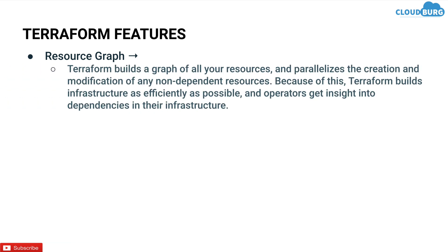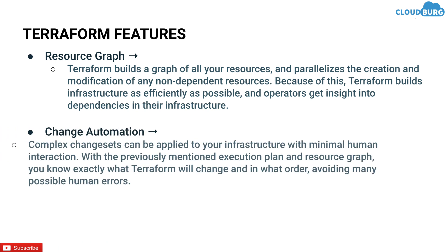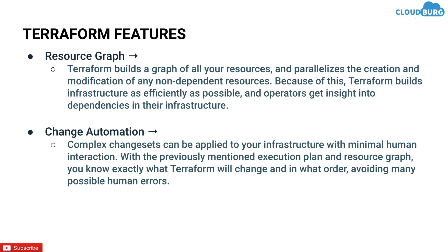Next is resource graph. Terraform builds a graph of all your resources and parallelizes the creation and modification of any non-dependent resources. Because of this, Terraform builds infrastructure as efficiently as possible and operators get insight into dependencies in their infrastructure. Next is change automation — complex change sets can be applied to your infrastructure with minimum human interaction. With the execution plan and resource graph, you can know exactly what Terraform will change and in what order, avoiding many possible human errors.